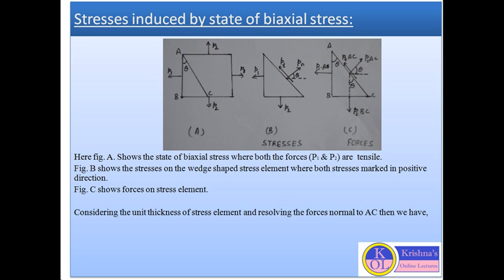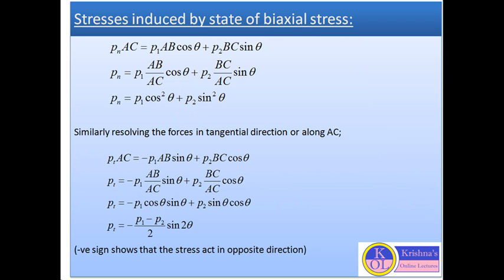Similar to the simple shear condition, we take unit thickness of the stress element and resolve the forces perpendicular to AC (normal to AC). Resolving all forces in the normal direction, we have: Pn·AC = P1·AB·cos θ + P2·BC·cos θ. Simplifying, the final equation for normal stress is Pn = P1·cos²θ + P2·sin²θ.